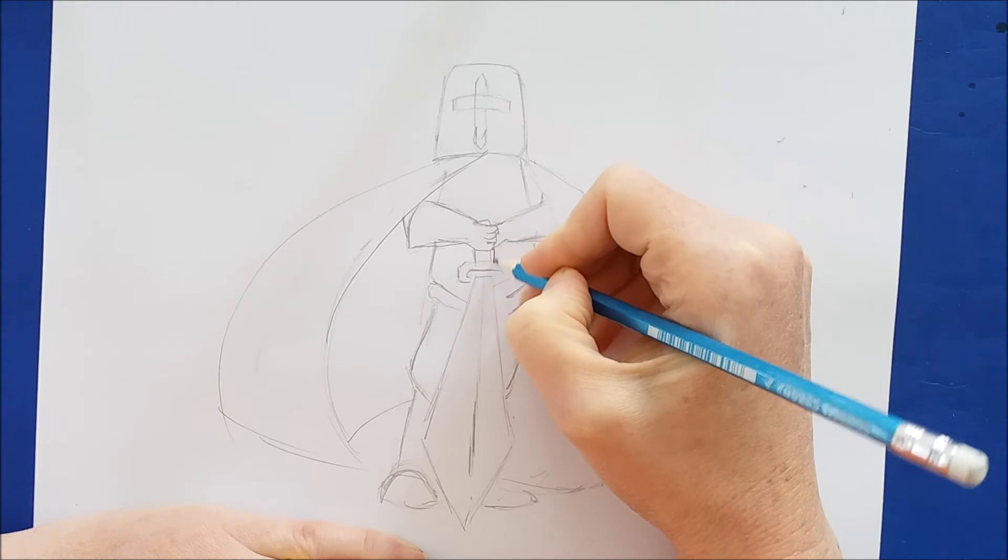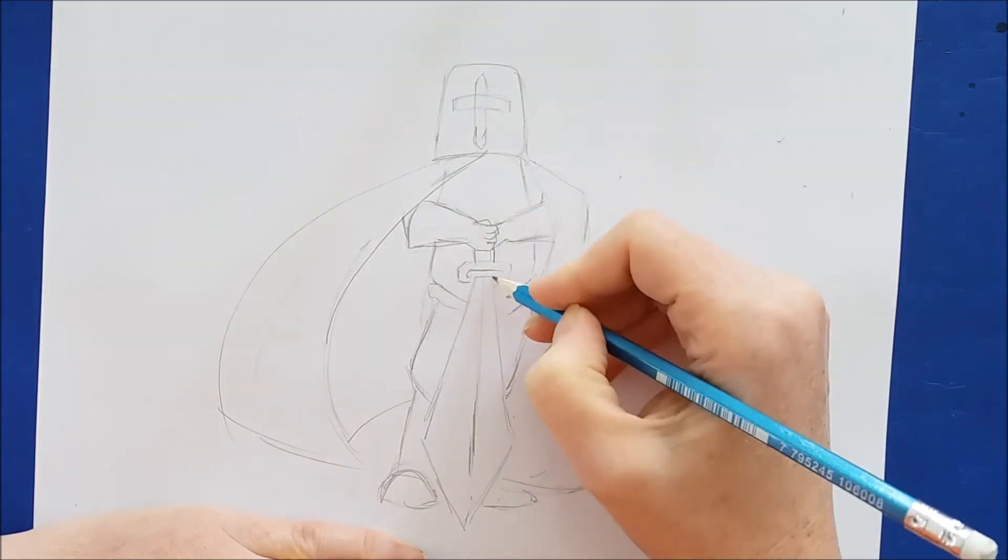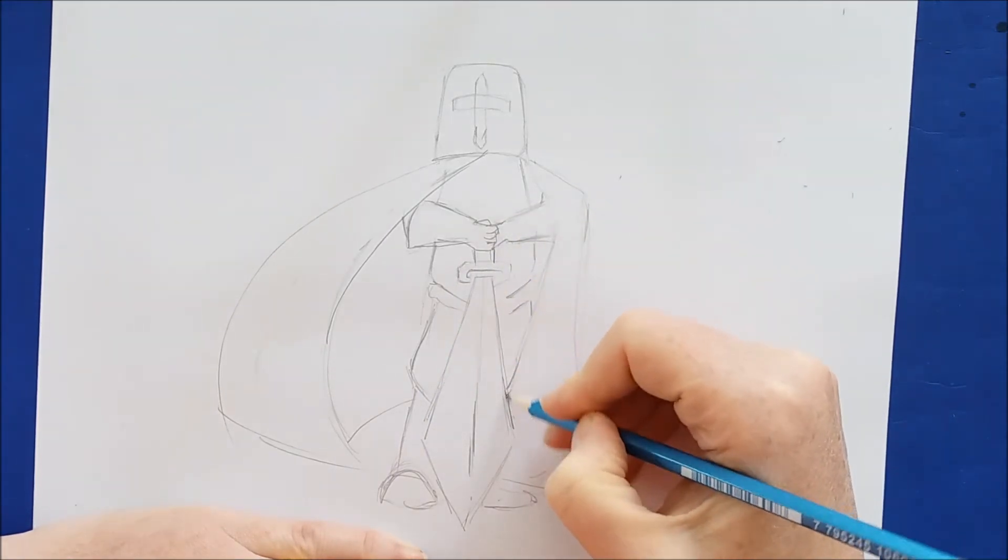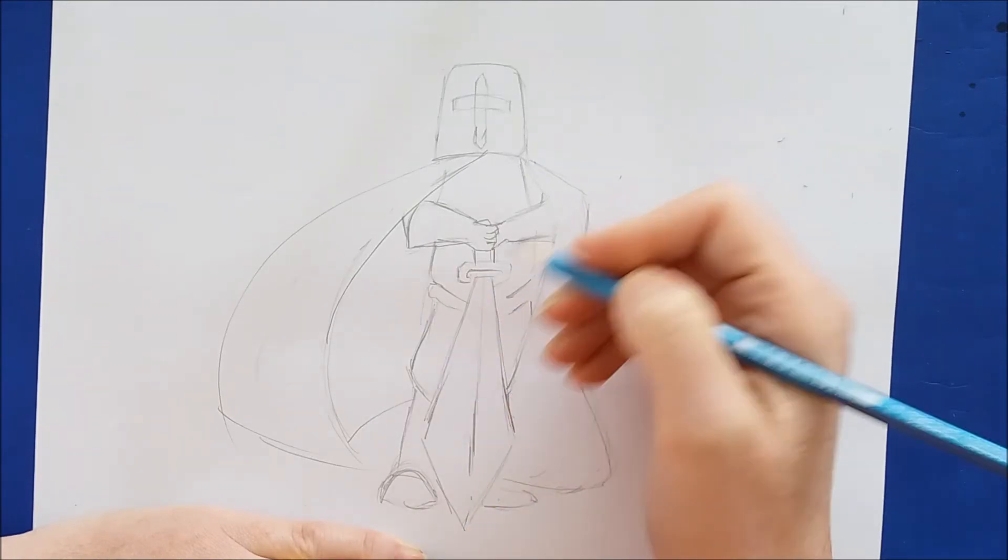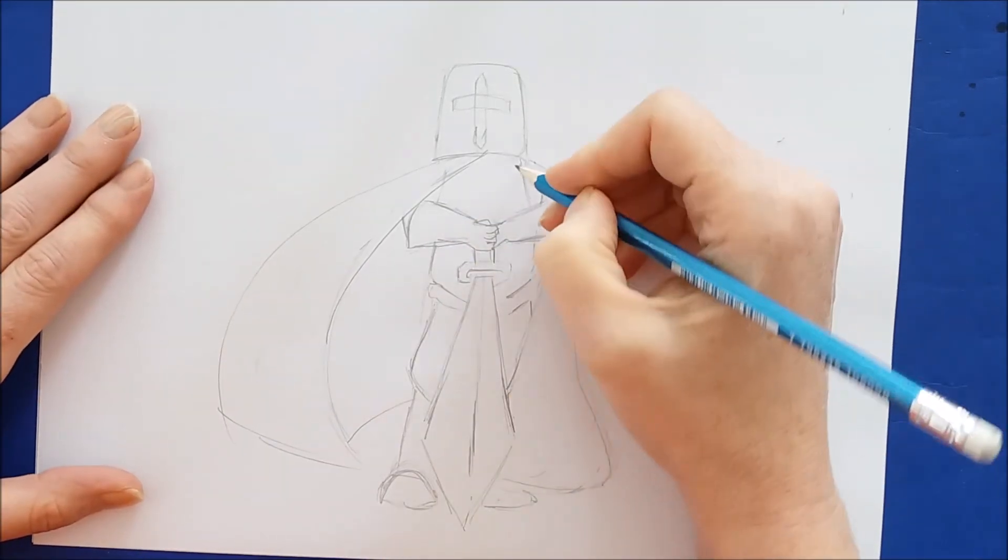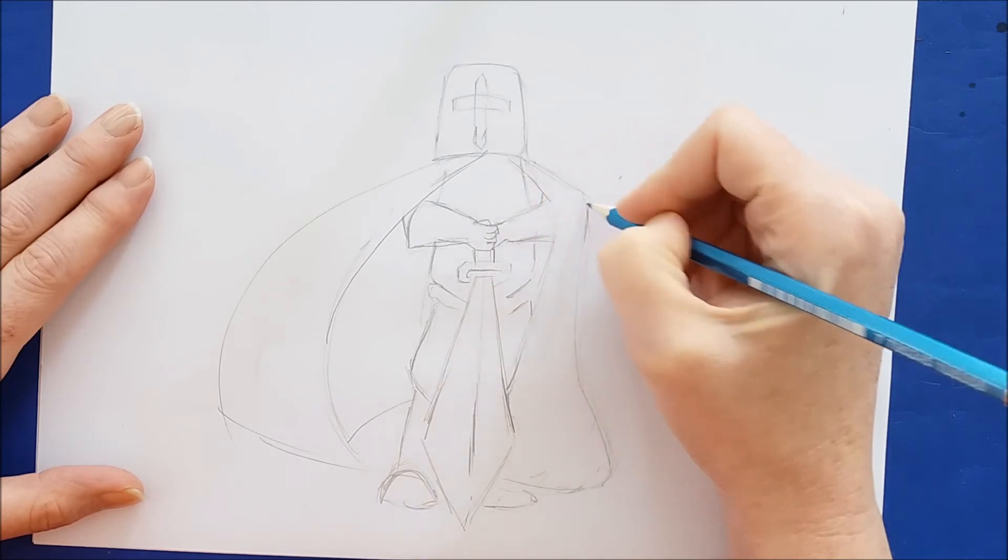So the knight's looking just about done. I'm adding a few little details to the handle and the guard of the sword. I'm going to add the blade edges here, just by outlining the sword.